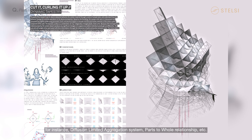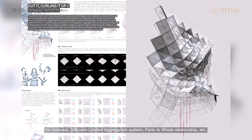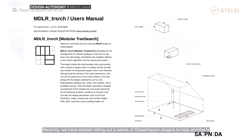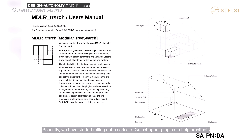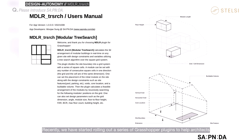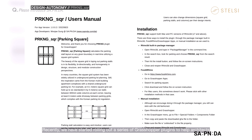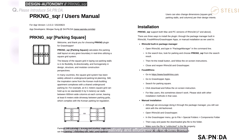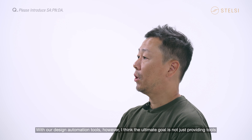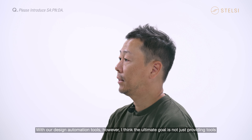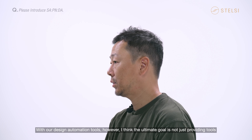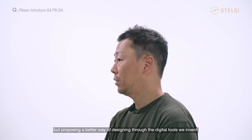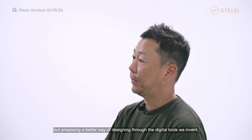We also designed a series of small scale installations inspired by nature's algorithms — for instance, diffusion limited aggregation systems, parts to whole relationships, etc. And recently, we have started rolling out a series of Grasshopper plugins to help architects design their projects creatively and effortlessly at the same time. With our automation tools, however, I think the ultimate goal is not just providing tools, but proposing a better way of designing through digital tools.